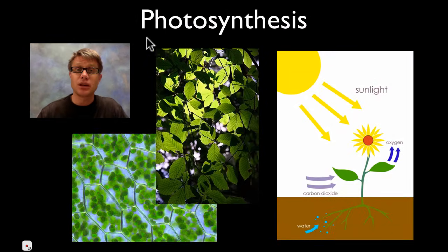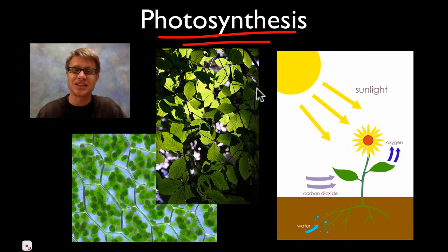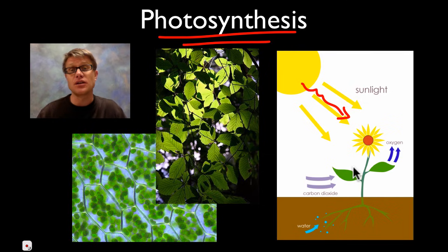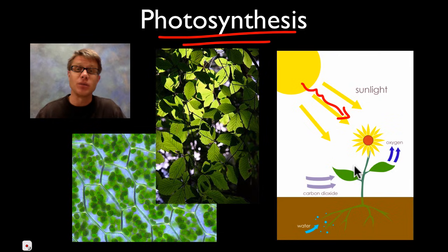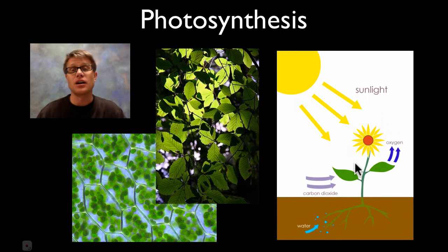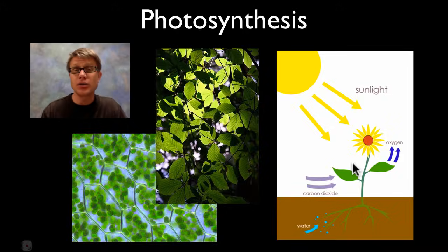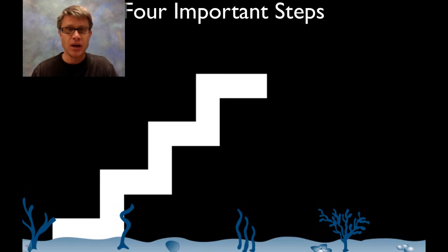How do plants make energy? Through photosynthesis — they take energy from the sun and convert it into sugars so they can store energy, build structures, and use cellular respiration to release energy in the form of ATP. In other words, they are self-sufficient, and we are simply parasites on plants.